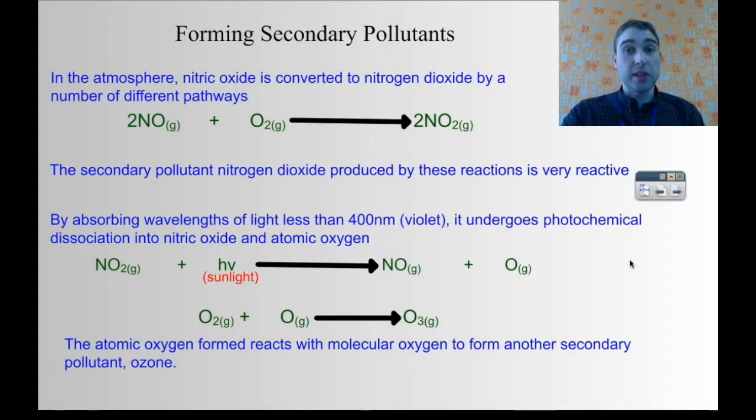In the atmosphere the nitric oxide is converted into nitrogen dioxide by a few different pathways. You don't need to go into the details there. Nitric oxide reacts with oxygen to produce nitrogen dioxide, and that's that brown gas that we see in the haze above cities.